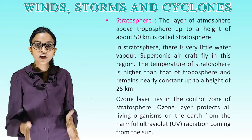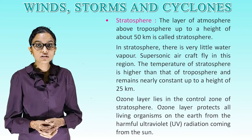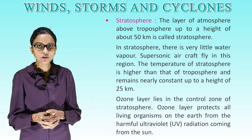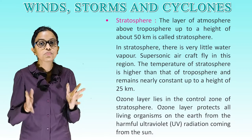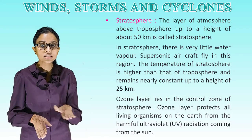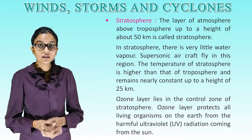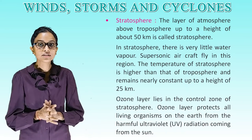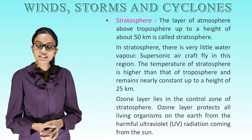Stratosphere: The layer of atmosphere above the troposphere, up to a height of about 50 km, is called the stratosphere. In the stratosphere there is very little water vapor. Supersonic aircraft fly in this region. The temperature of the stratosphere is higher than that of the troposphere and remains nearly constant up to a height of 25 km. The ozone layer lies in the stratosphere and protects all living organisms on earth from harmful ultraviolet (UV) radiation coming from the sun.